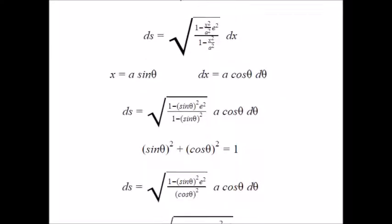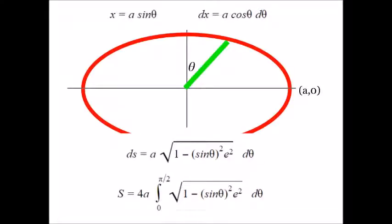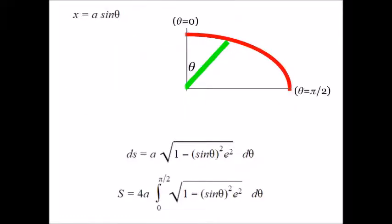And integration. Thinking about limits. This time it'll be from theta equals zero to pi over two, and then we'll multiply by four for the ellipse perimeter. Great. Great. Terrible. Because you can't integrate that. At least I can't.